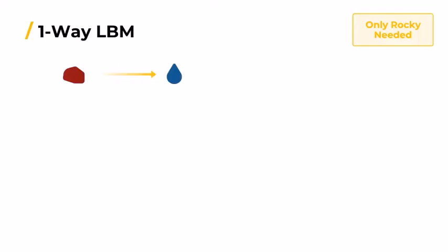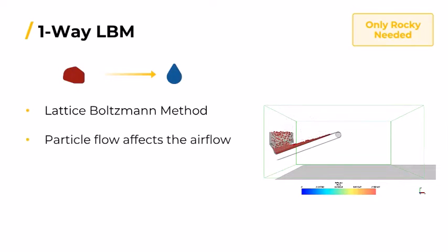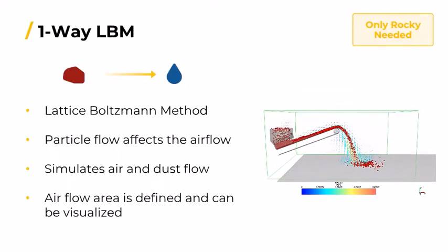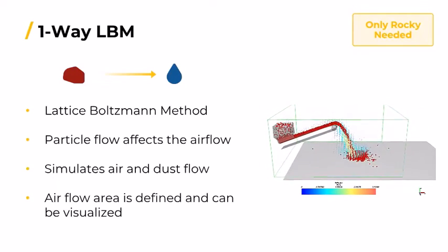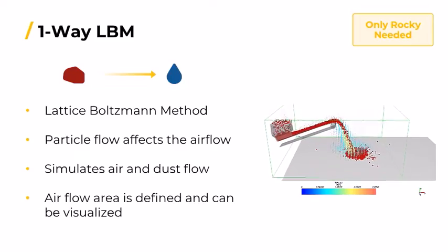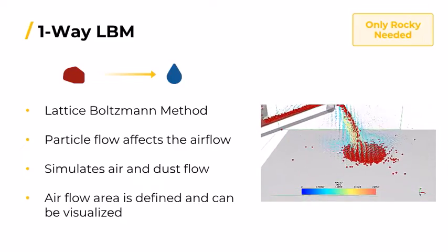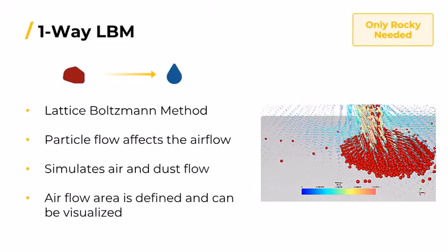And to finalize, the one-way lattice Boltzmann method, in which particle flow affects the fluid flow but the fluid flow does not, in turn, affect the particles. It simulates the air flow resulting from particle motion, which is useful, for example, to investigate how to mitigate dust generated out of a transfer chute.